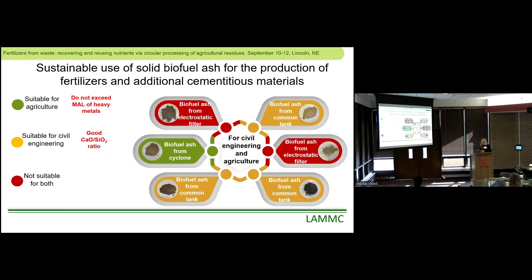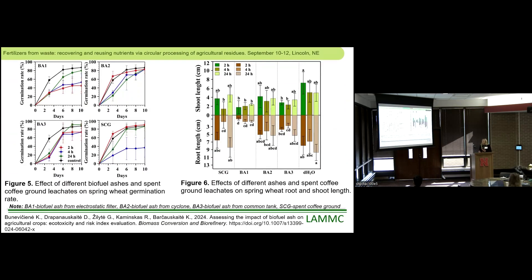The partners found that ashes from the common tank are good to use in civil engineering as an additional cementitious material because they have a favorable calcium oxide and silicon dioxide ratio. Ashes taken from the electrostatic filter were not suitable for either civil engineering or agriculture — they had too high a calcium oxide to silicon dioxide ratio and exceeded maximum allowable limits for most elements. We were also curious to see what ecotoxicity effect ashes from these different locations have on seeds.